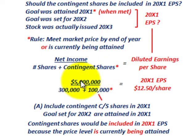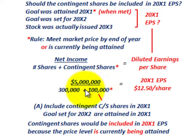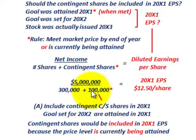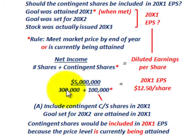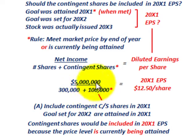For example, our net income was $5 million for Corporation A for the year, and we had 300,000 shares of common stock as the average number of shares outstanding. Then we'd add that extra 100,000 shares to be issued to Corporation B's shareholders — issued actually in year 20x3, but because we met that goal ahead of time and based on our rules, we include it in the earnings per share. So dividing net income by 300,000 plus 100,000 shares gives us 20x1 earnings per share of $12.50 per share for Corporation A.